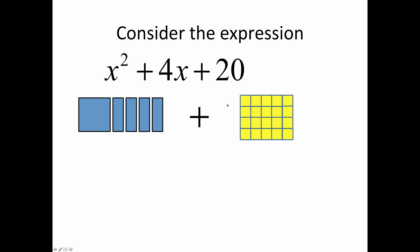On the right, we have 20 square units. Each one has an area of 1. Once again, we want to rearrange these pieces to make the largest square possible that involves the x², all of the x bars, and as many units as we need.